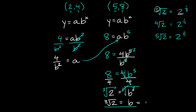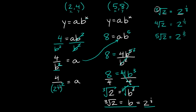So b can be rewritten as 2 raised to the 1/3 power. Now that we know what b is equal to, we can plug it back into the first equation — a is equal to 4 over b squared — so we substitute 2 to the 1/3 in for b, but it's still being raised to the 2nd power. So we have a is equal to 4 over (2 to the 1/3) squared. As you can see, we have an exponent raised to another exponent.